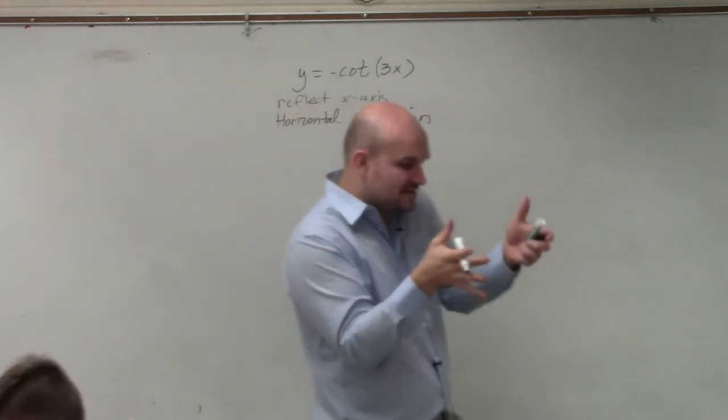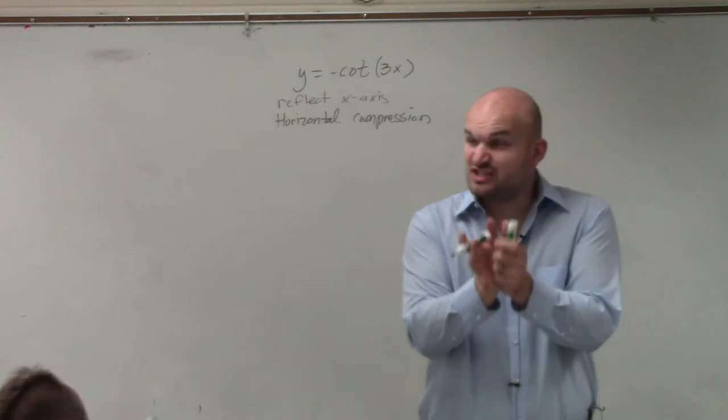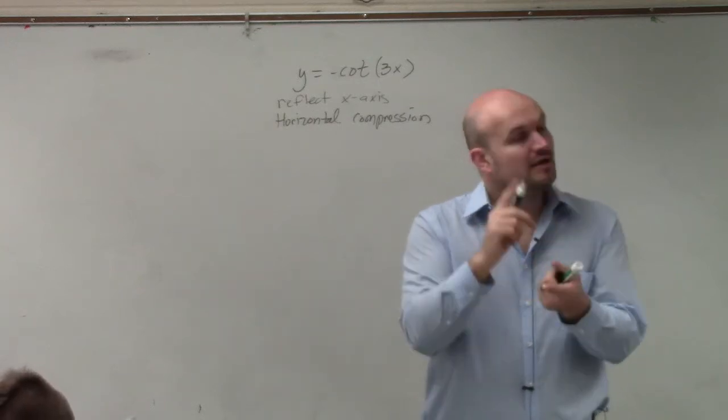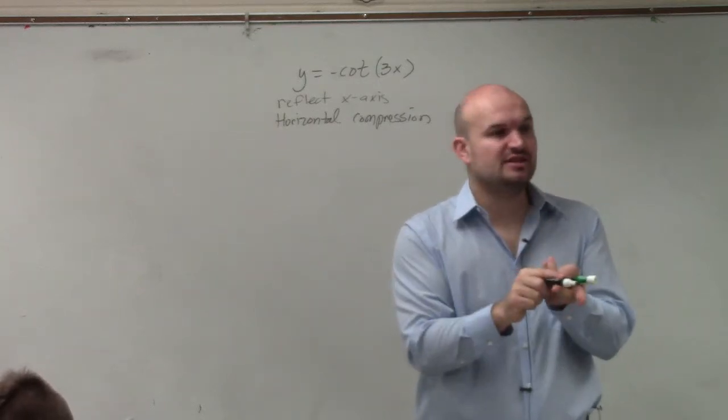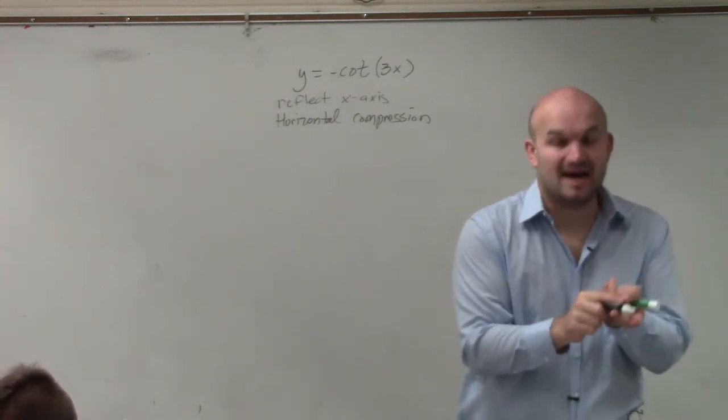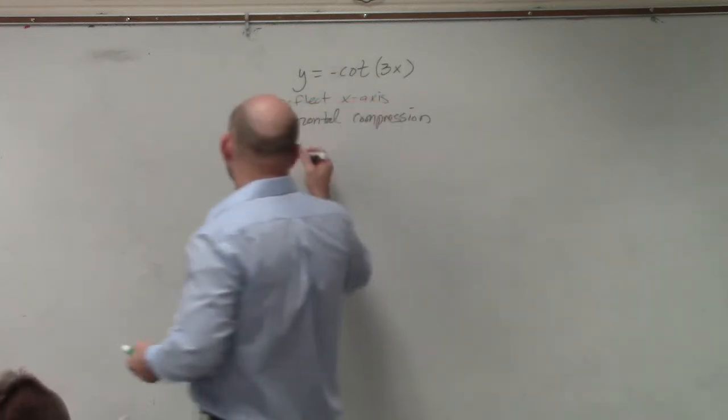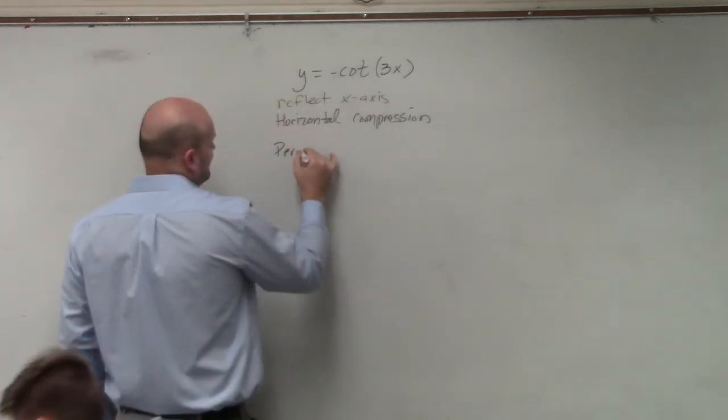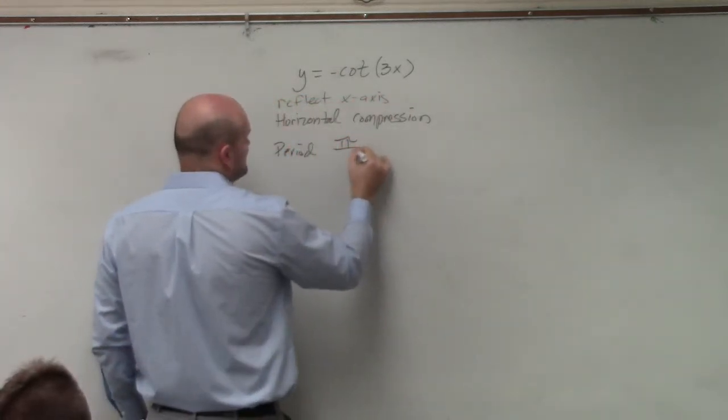And remember, the horizontal compression for trigonometric functions affects the period. Remember, for cotangent and tangent, the period occurs at pi divided by absolute value of b.